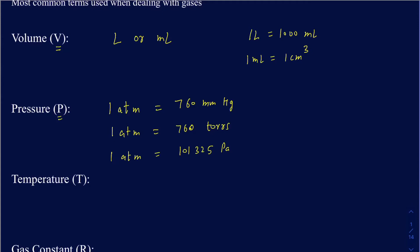There are some other less commonly used units for pressure, but those four are the most common. For the most part you use atmosphere, but there are times when you can use mm of mercury, torr, or even pascals. I'll tell you when you have to be really careful with the units.